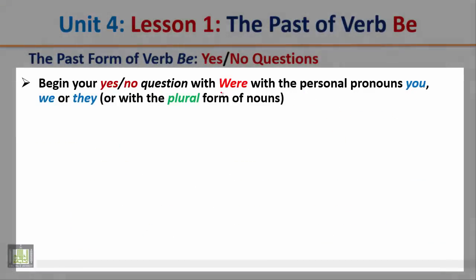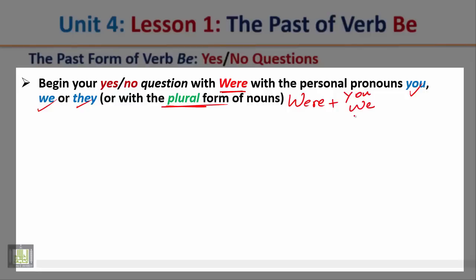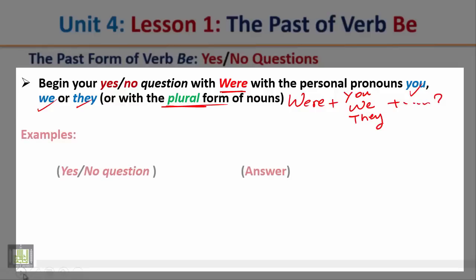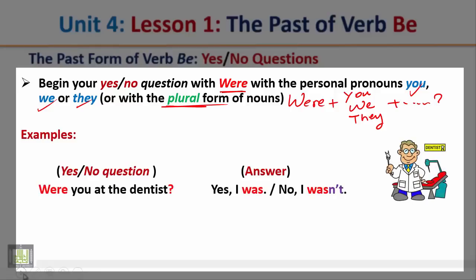Begin your yes/no question with 'were' with the personal pronouns you, we, they, or the plural form of nouns. Start the question with 'were' plus the subject — you, we, they, or a plural noun — then complete your question. Example: 'Were you at the dentist?' The question starts with the verb 'were,' then the subject. The answer: yes, I was, or no, I wasn't.